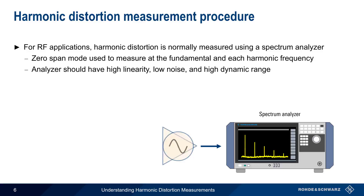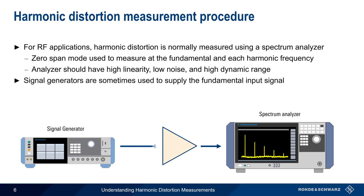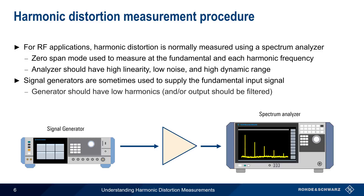Some types of DUT, such as an amplifier, require an input, and signal generators are therefore sometimes needed to provide this input signal. Like spectrum analyzers, a signal generator used in making harmonic distortion measurements needs to have good performance and, in particular, low-output harmonics. In some cases, it may be necessary or advantageous to use an external low-pass filter to further reduce any harmonics present in the generator output.